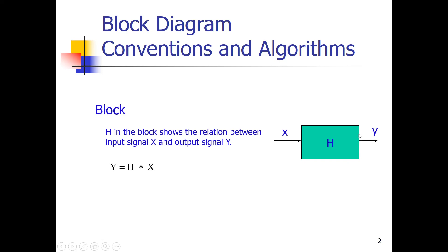H could be a gain, but it can also be a much more complicated mathematical expression. It could include an integrator or a differentiator, or in general, H can be a transfer function. We can define that transfer function — the mathematical behavior of that system H — as H equals the signal Y over X.